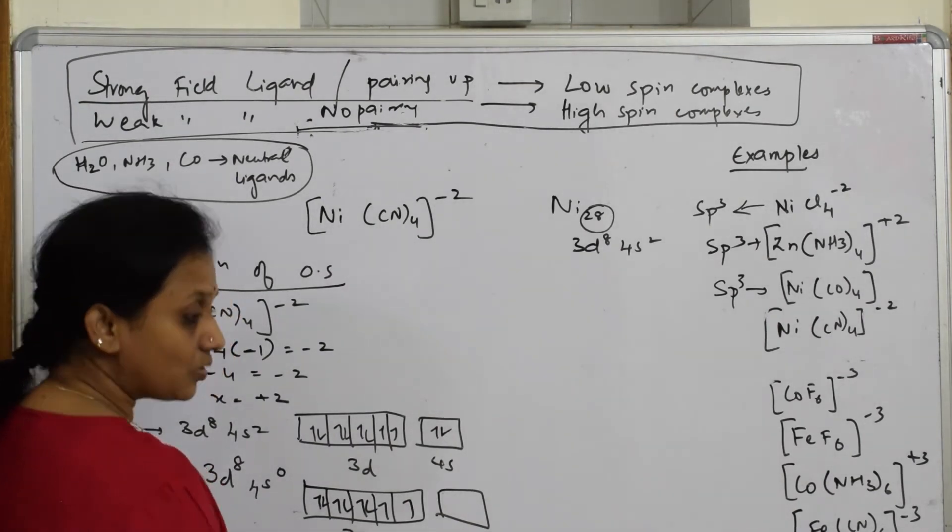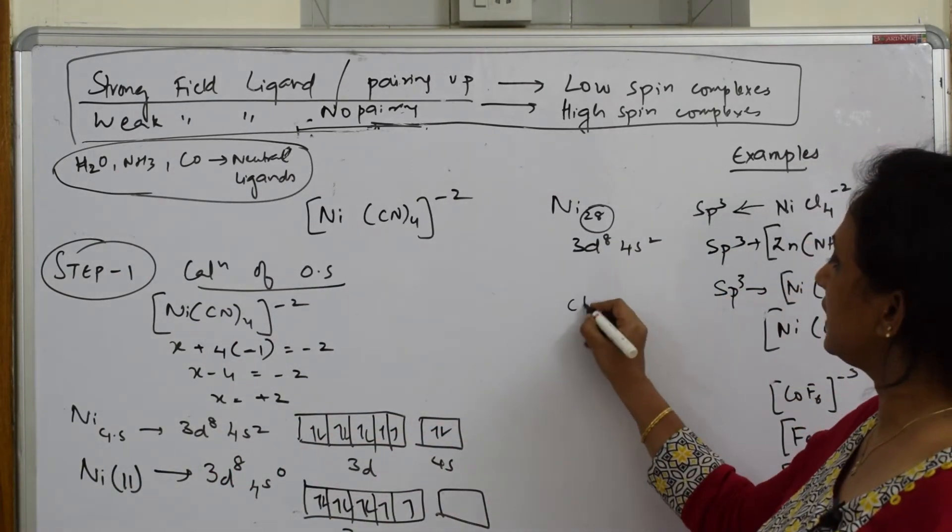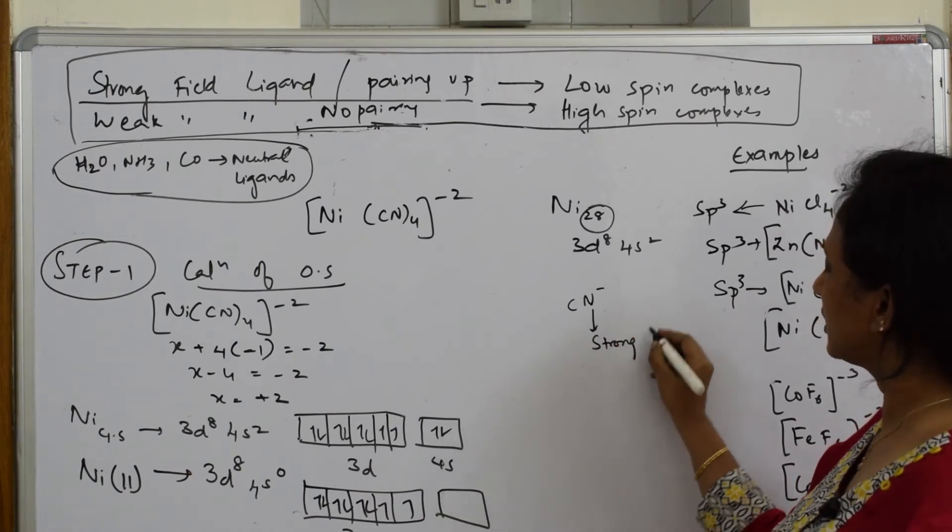You have to be careful when your cyano is trying to approach. What is the nature of cyano group? Very careful: CN minus is a strong field ligand.